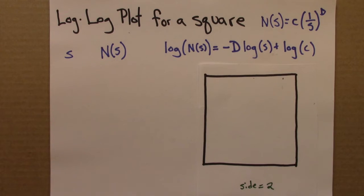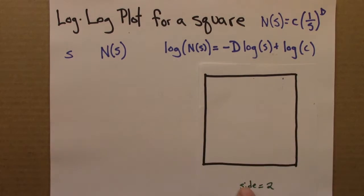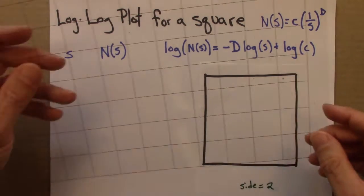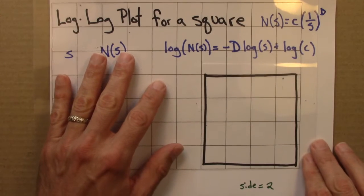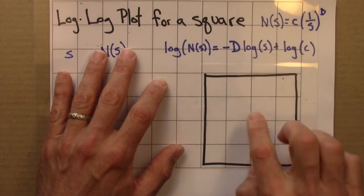So let's start off by doing box counting as we normally would. So this is a square, you can imagine it's filled in. And let's say the side is 2, and I'm going to say that these first set of boxes have a side of a half.